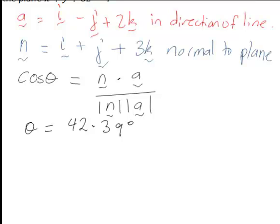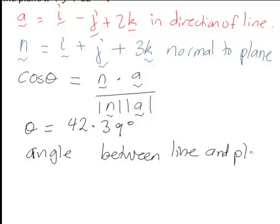But we saw that this was the angle between a vector in the direction of the line and the normal vector to the plane. So to find the actual angle between the line and the plane, which is what we're requiring here, then we actually need to work this out as alpha, let's say, is equal to 90 degrees minus theta.